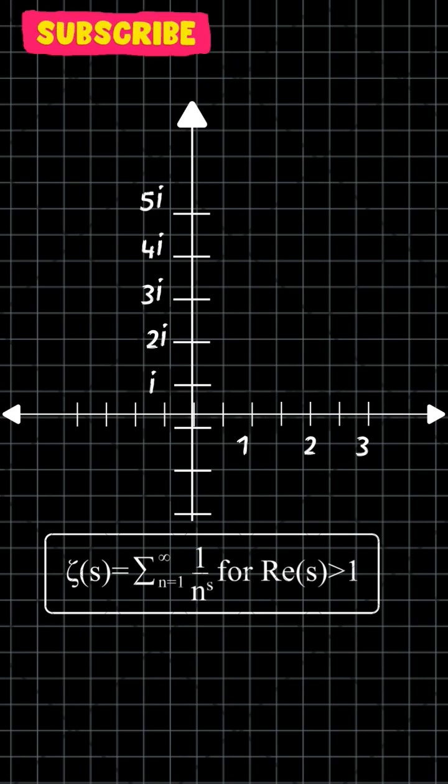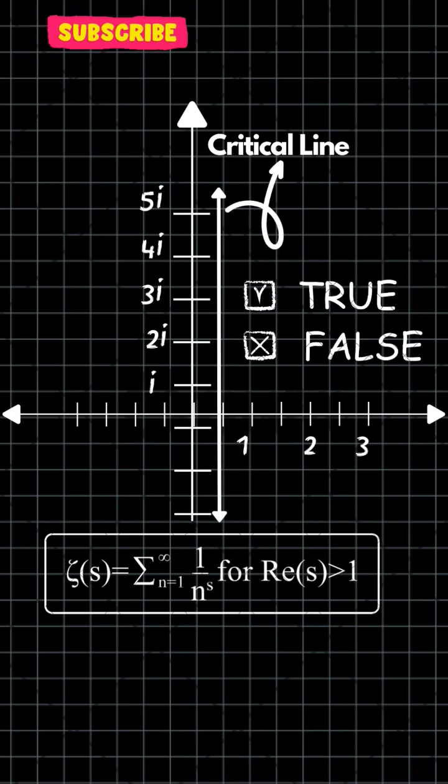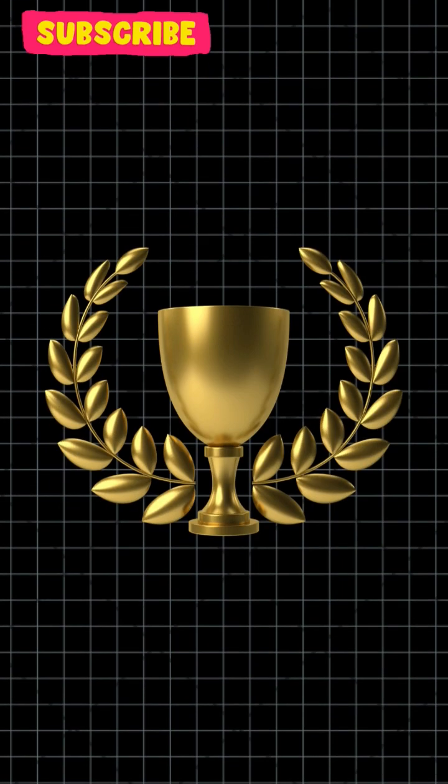Now, the mystery is, he has stated that all the values for this equation lie in this plane of line called the critical line, and the attempt is to prove whether his statement is true or false. If you are able to do so, a Nobel Prize is waiting for you.